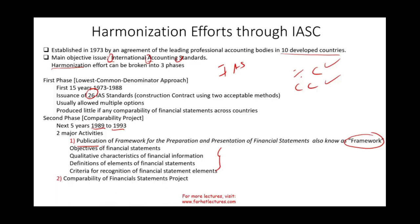Also during phase two, they wanted to start a comparability of financial statements project. They reduced or eliminated certain choices — for example, regarding percentage of completion versus completed contract method, they put more restrictions on when you would use either one, adding rules to eliminate choices and achieve more harmonization and comparability.